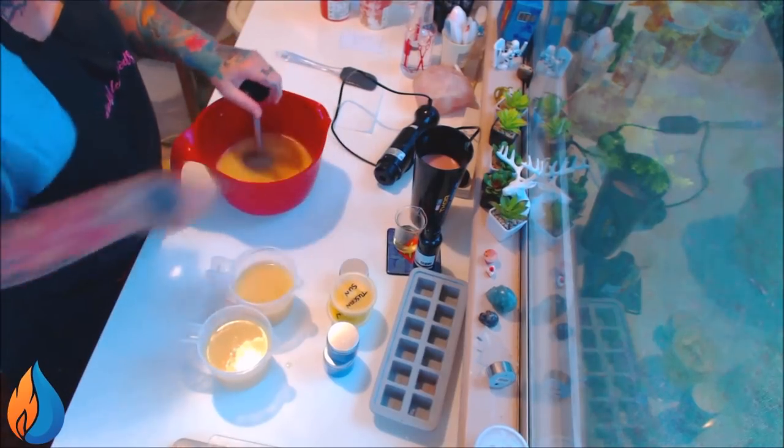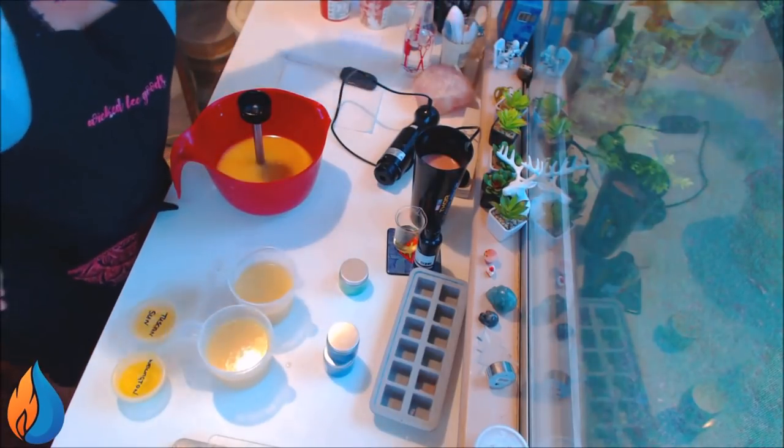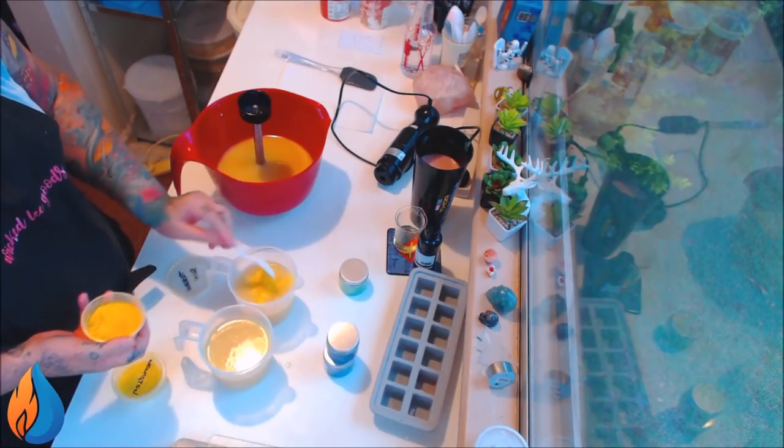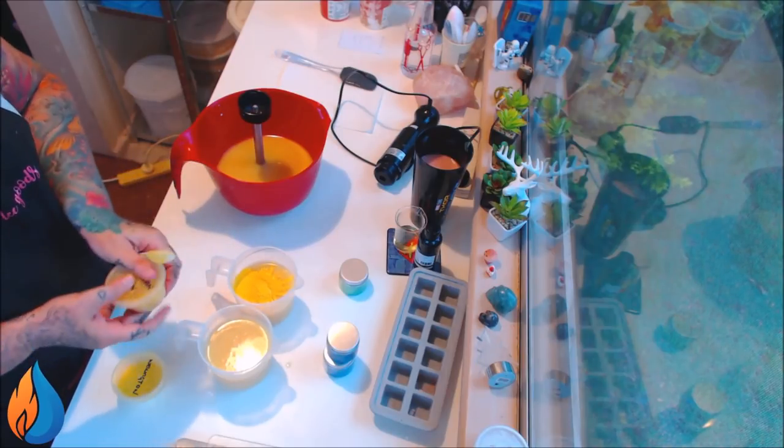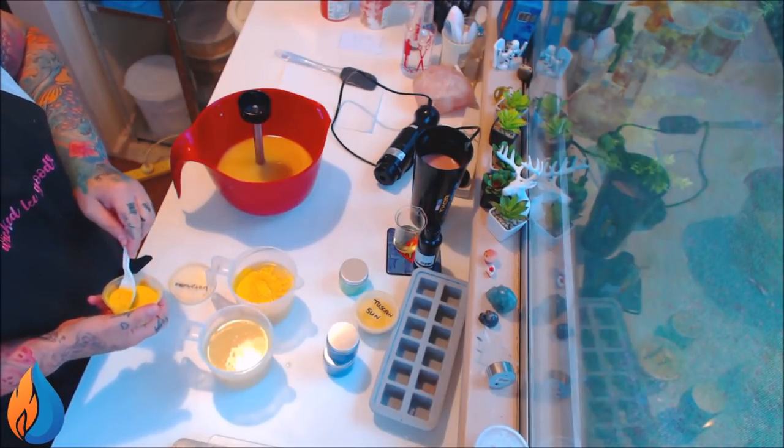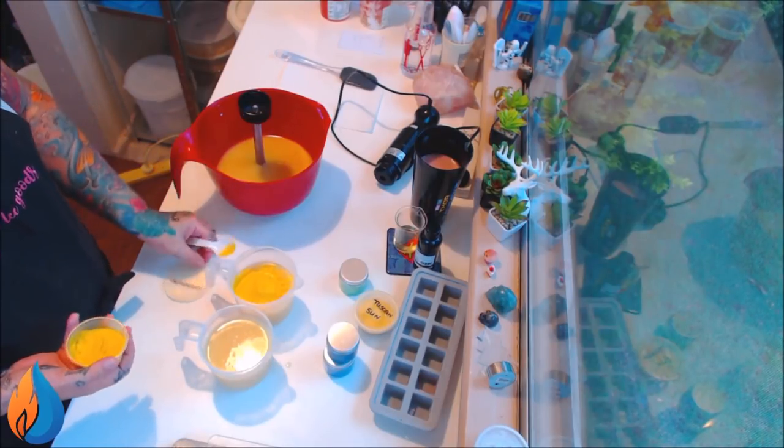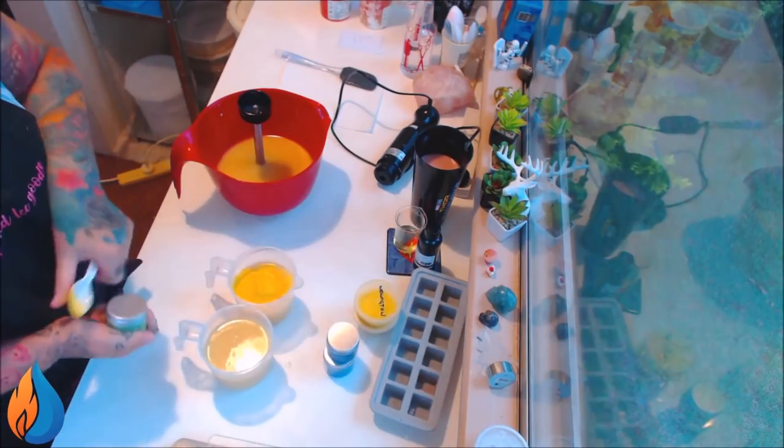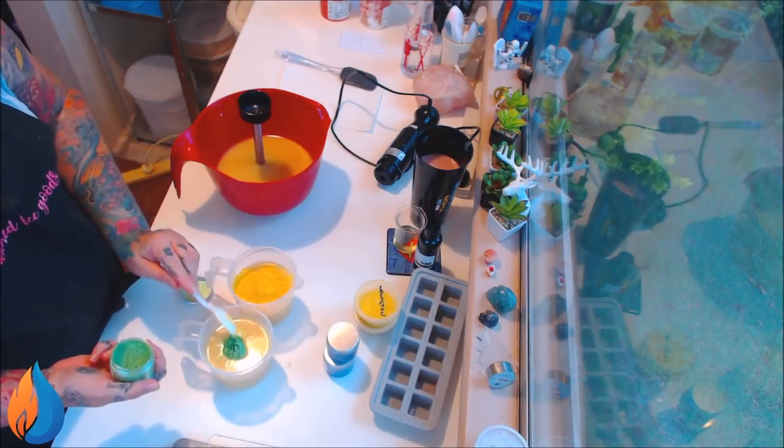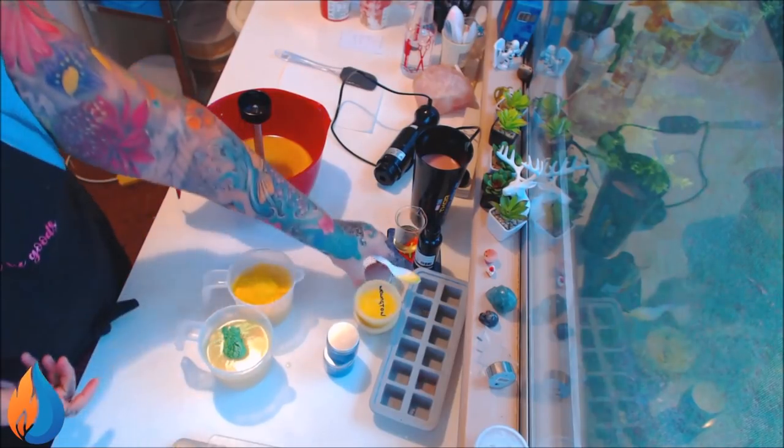For the yellow I'm going to mix Tuscan Sun and Wellington. I want a fairly bright yellow so I'm going to use a decent amount. Green is the lime spider of course - look, it's full, this is the first time I've used it.